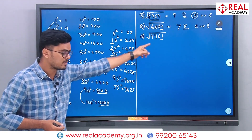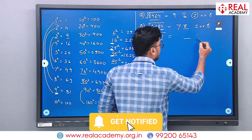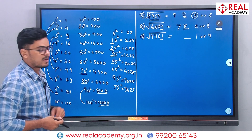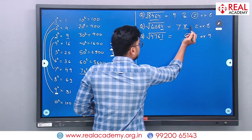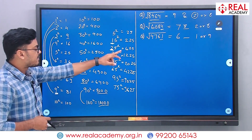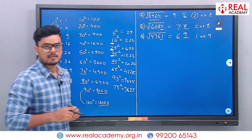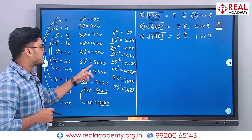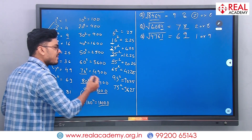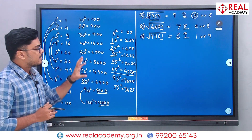Now let us solve √4761. Units place is 1, so units place of the answer is 1 or 9. The range is between 60 squared (3600) and 70 squared (4900), so tens place is 6. Since 4761 is more near to 70 squared than 60 squared, the answer is 69, not 61. If confused, find 65 squared which is 4225 — since 4761 is greater than 4225, nine is the answer.